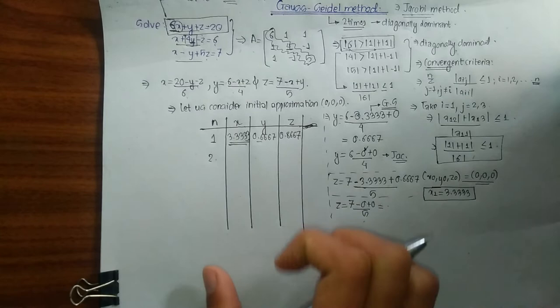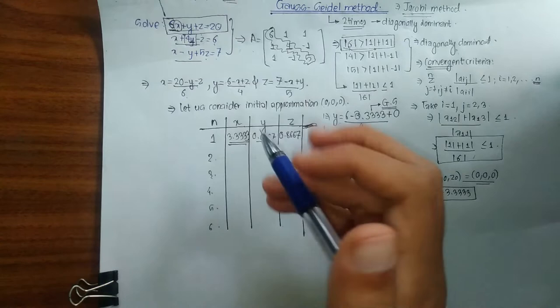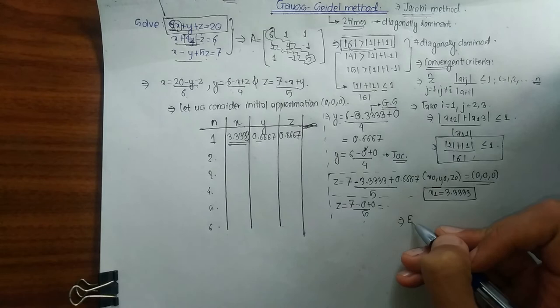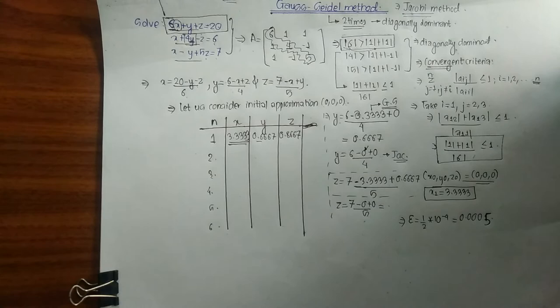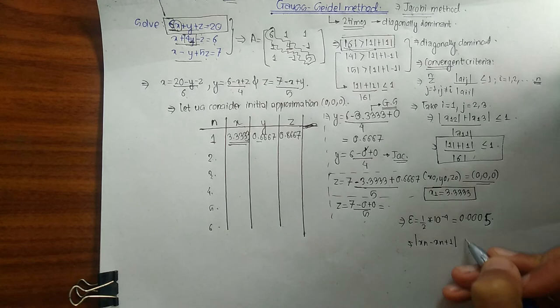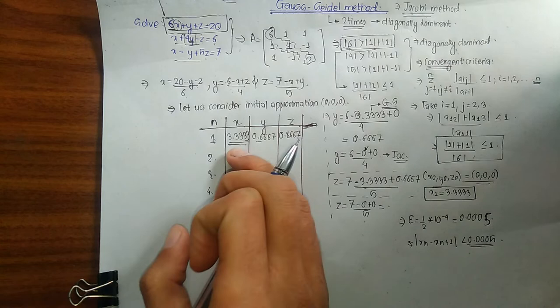We run iterations until x_n and x_(n+1) are completely the same to four decimal places. Alternatively, we calculate the error as e = (1/2) × 10⁻⁴ = 0.00005, and we stop when |x_(n+1) − x_n| < 0.00005. To simplify, we can stop once consecutive x values are identical to four decimal places.